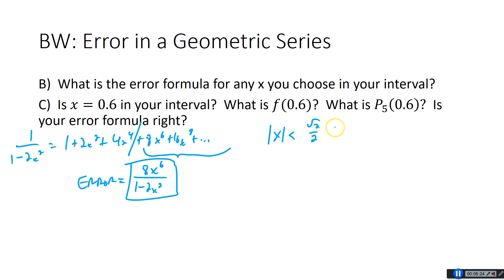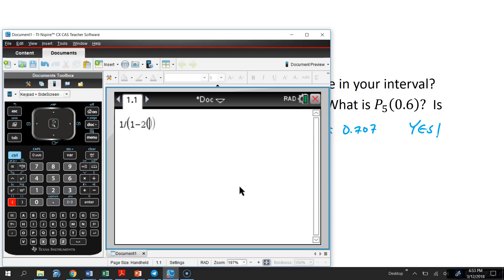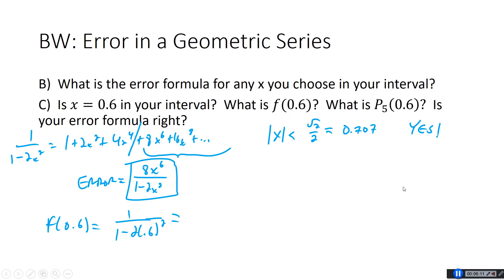Now they ask if 0.6 is in our interval. Root 2 over 2 is about 0.707, so yes, 0.6 is indeed in our interval. They ask what f(0.6) and p5(0.6) are to see if our error formula is right. So f(0.6) = 1/(1 - 2·(0.6)²). Using a calculator: 1/(1 - 2·0.6²) = 3.57143.